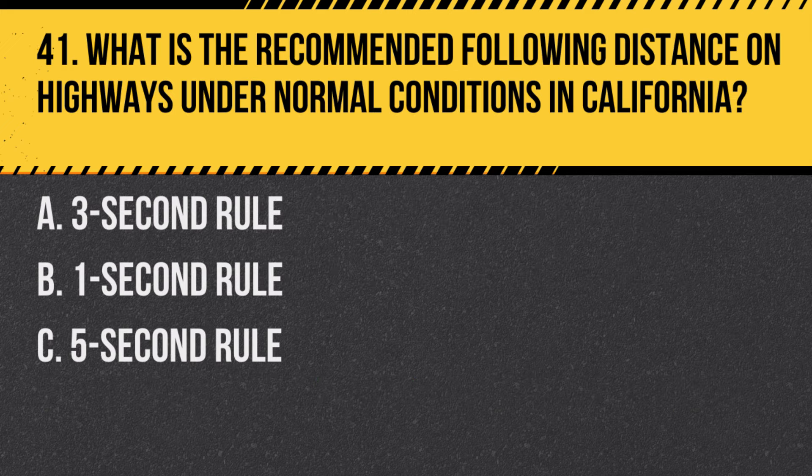Question 41: What is the recommended following distance on highways under normal conditions in California? A. Three-second rule. B. One-second rule. C. Five-second rule. Answer: A. Three-second rule. The recommended following distance on highways under normal conditions is the three-second rule, to ensure enough time to react and stop if necessary.